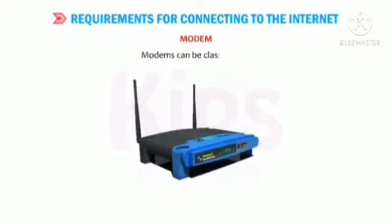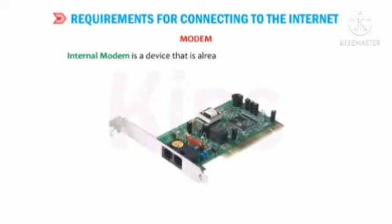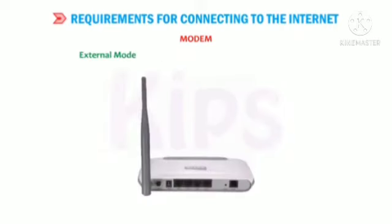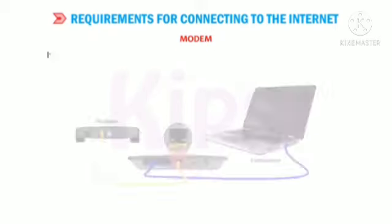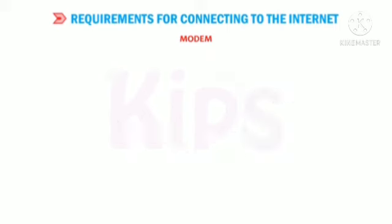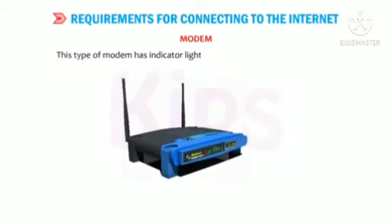Modems can be classified as follows. An Internal Modem is a device that is already installed in the computer; it is in the form of a card inserted into one of the slots on the mainboard. An External Modem is installed outside the CPU, in the form of a box normally connected to the USB port. This type of modem has indicator lights that display the status of the modem.